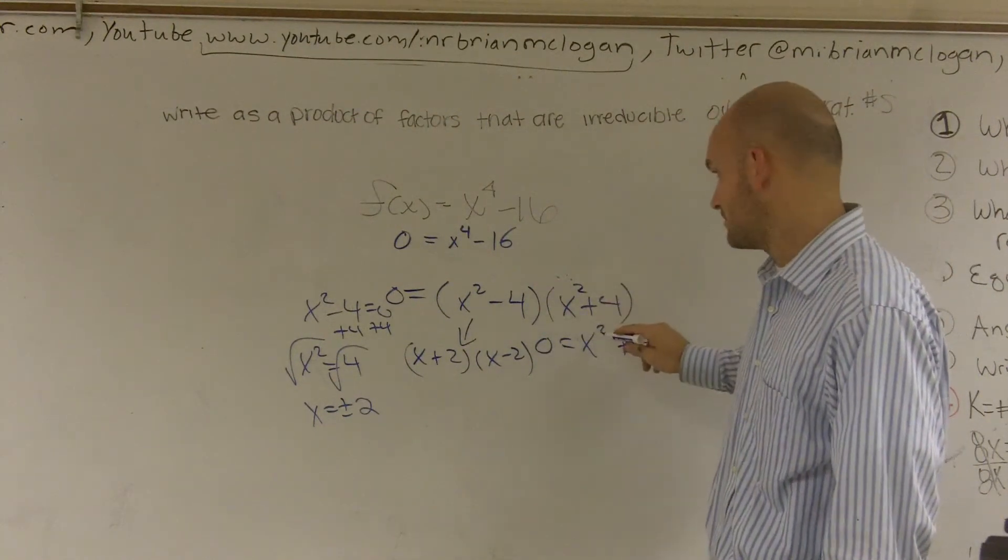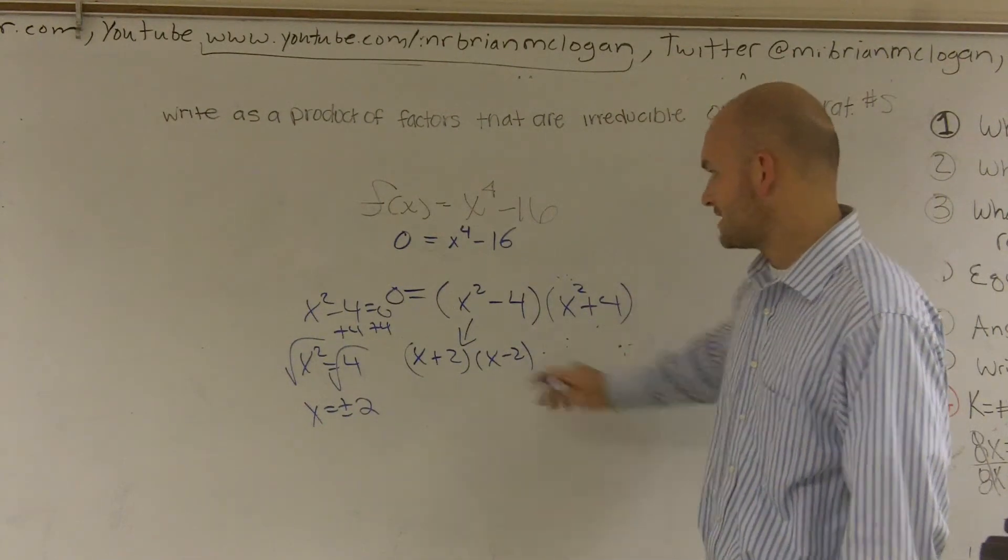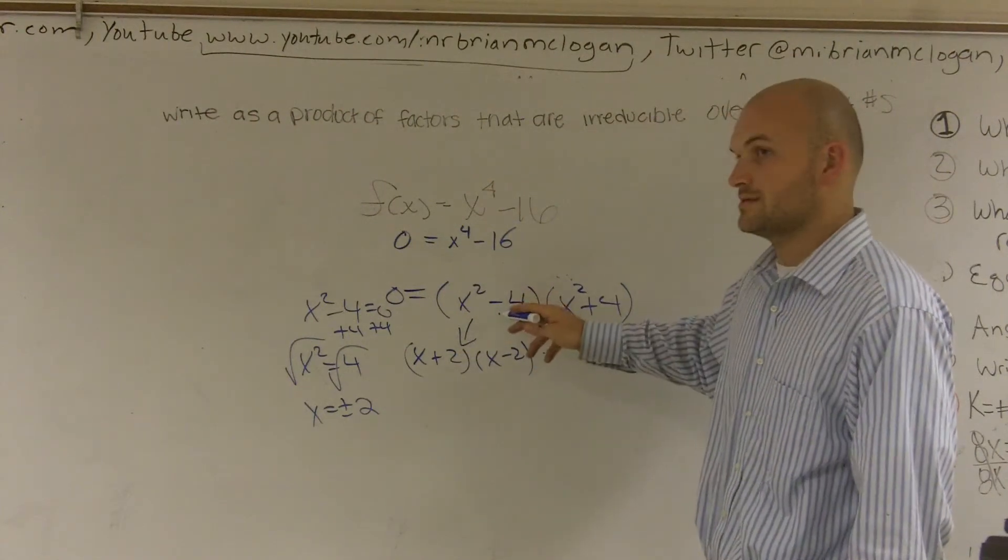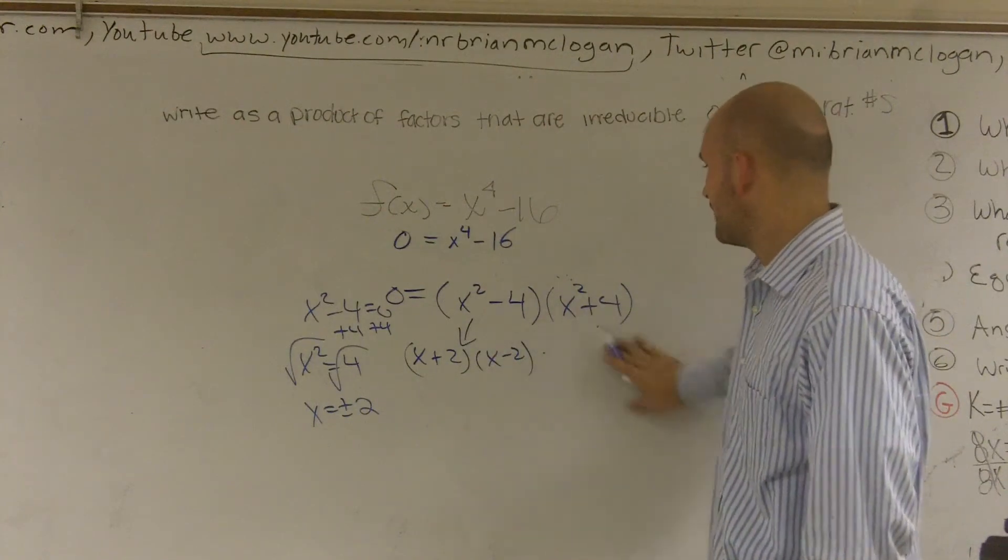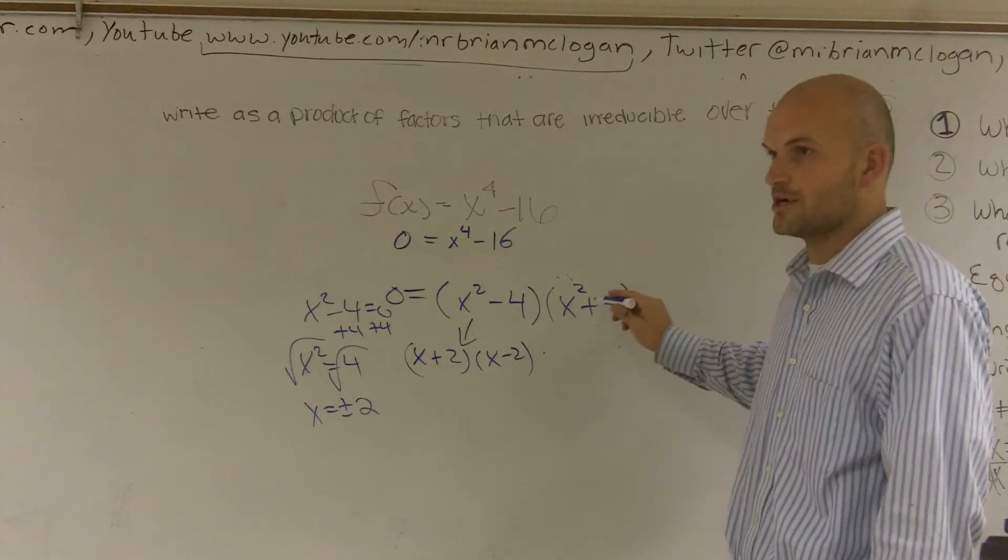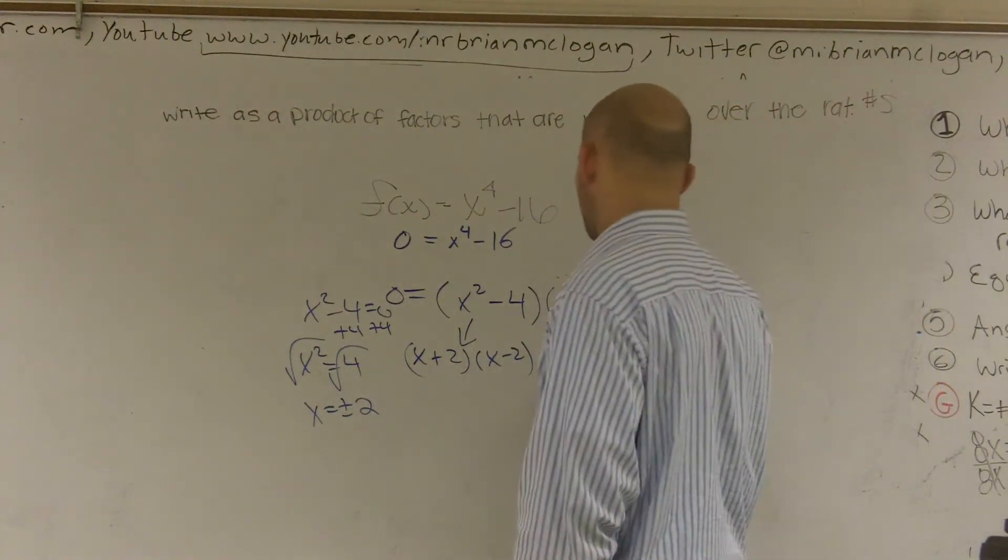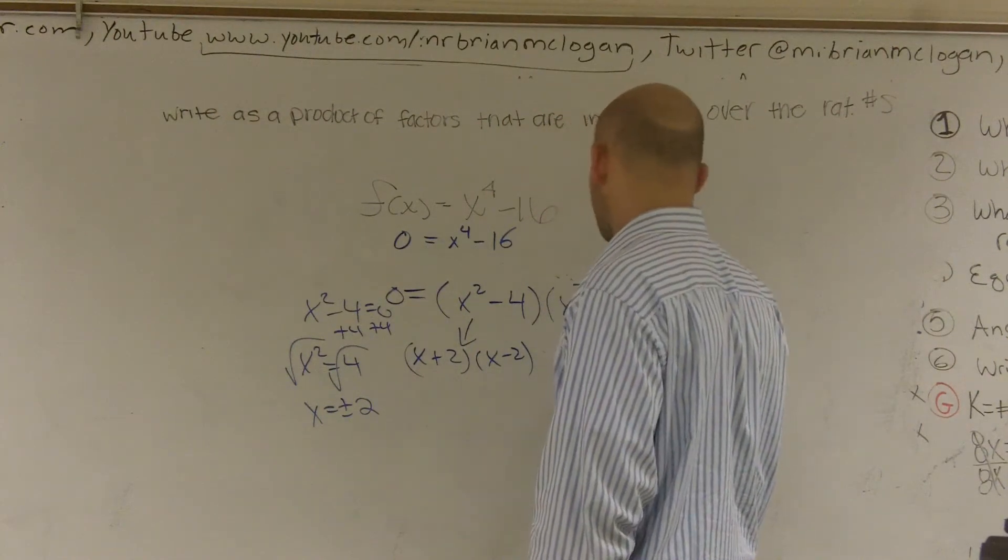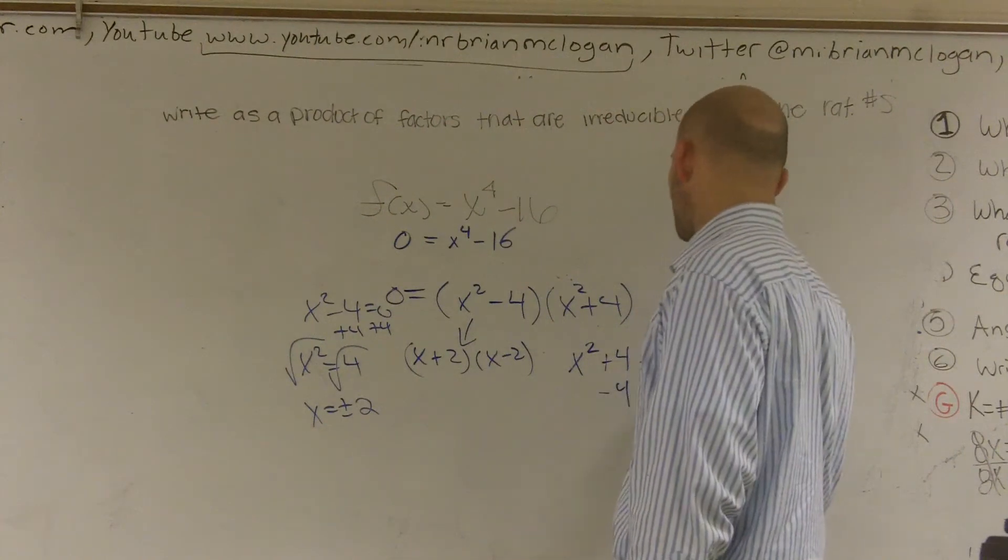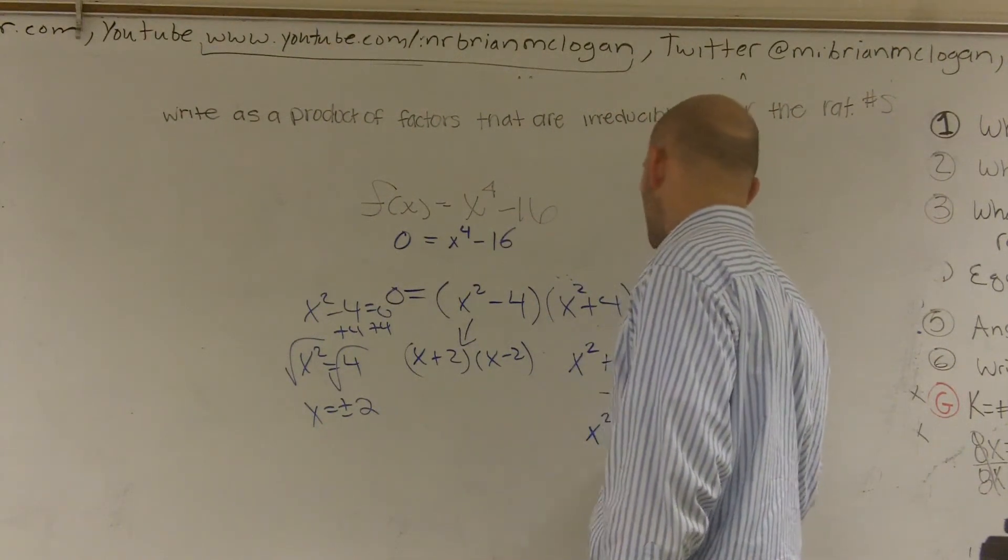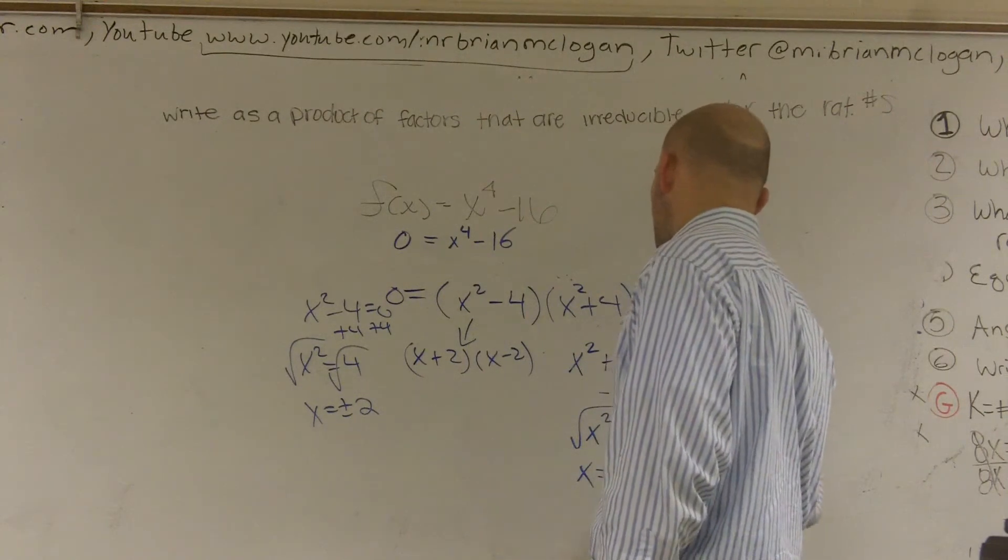But we haven't factored this one here. It's the same thing. Be careful. Because it can't be the same thing, because x plus 2, x minus 2 gives you this. Oh, it would be x plus 2 and x plus 2. Well, but remember, x plus 2 times x plus 2 is going to give you a middle term. Only a difference of two squares cancels out the middle term. And I'll show you what we have. So we have x squared. So instead of trying to factor it in our head, let's set it equal to 0 and see actually what our zeros are. So I subtract 4, I get x squared equals negative 4. Square root, x equals plus or minus 2i.